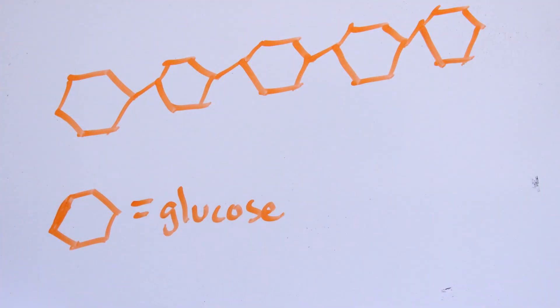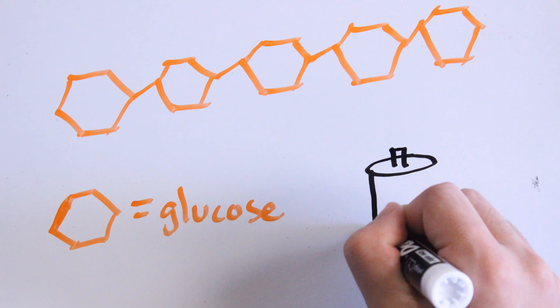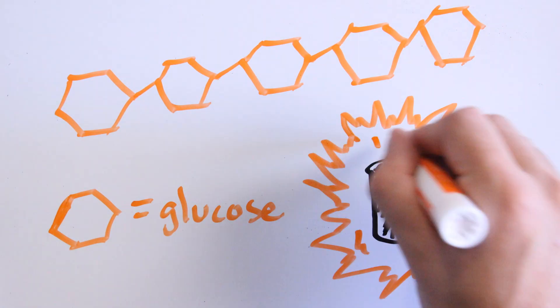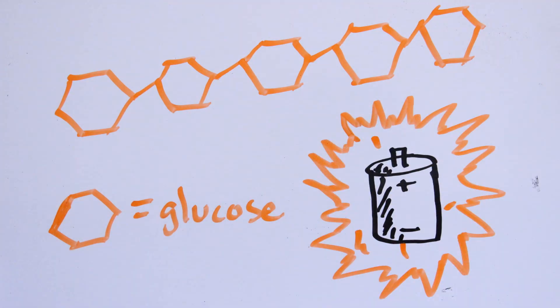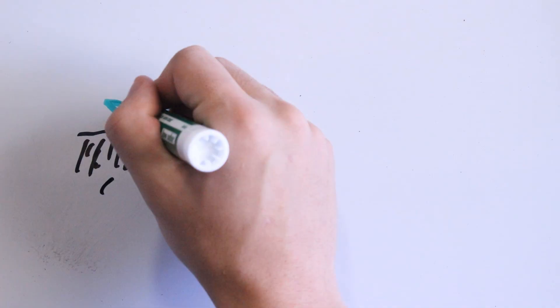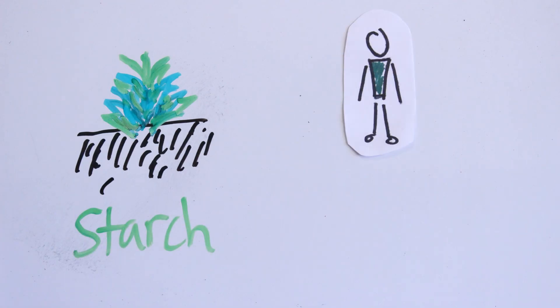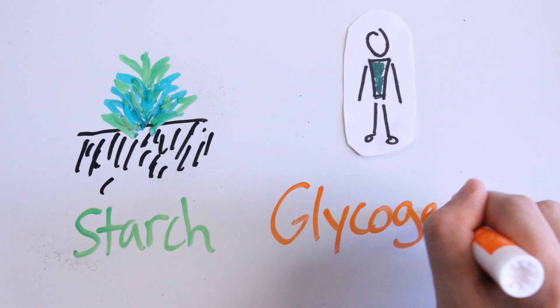Polysaccharides are carbohydrates that have many sugars bonded together. These types of molecules are great for storing energy, both for plants and animals. One type of polysaccharide plants use for storage is called starch, while animals like humans store them in the form of glycogen.